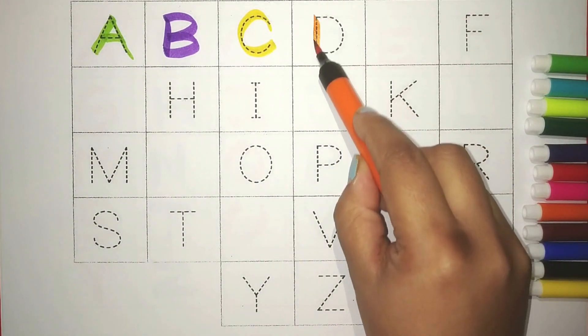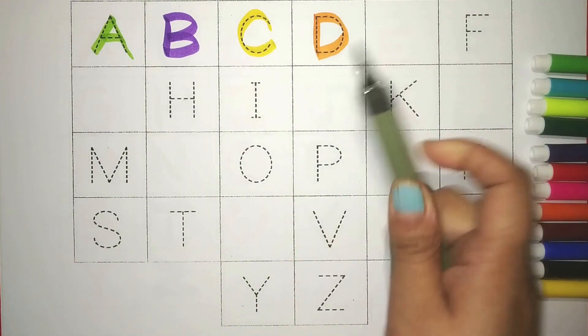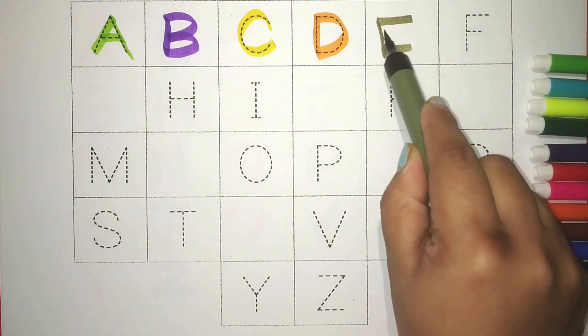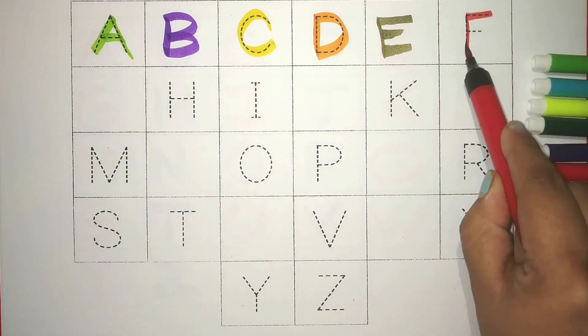Orange D. D for dog. Gray E. E for elephant. Red F. F for frog.